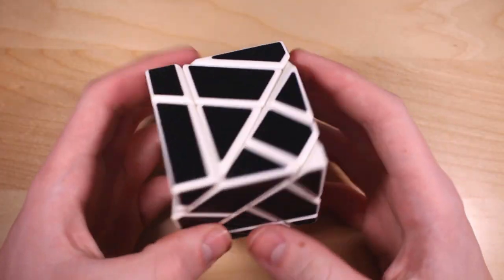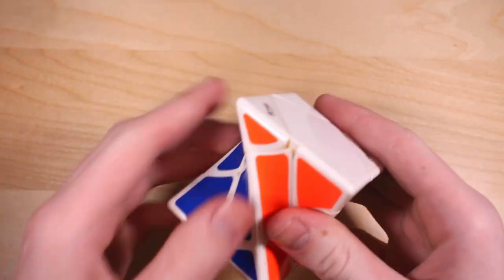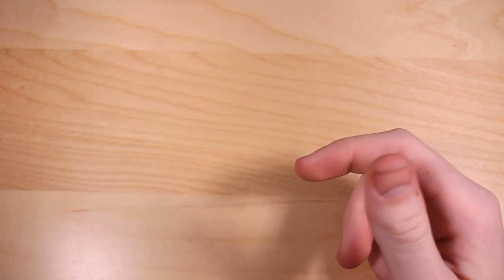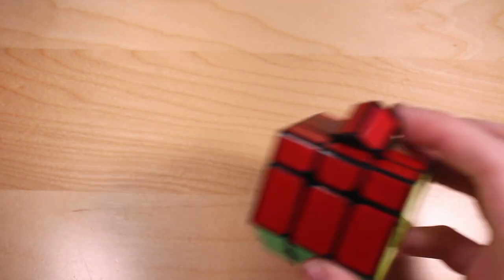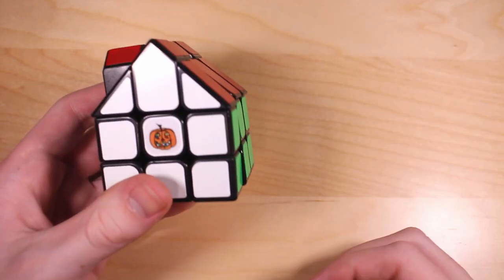Unknown Brand Ghost Cube, a pretty hard 3x3 shape mod. Teacher got it as a gift for me. QiYi Twisted Skewb or Twisty Skewb, something like that. Skewb shape mod, it's pretty easy if you can do center orientation. Unknown Brand House Cube, a surprisingly challenging 3x3 shape mod.